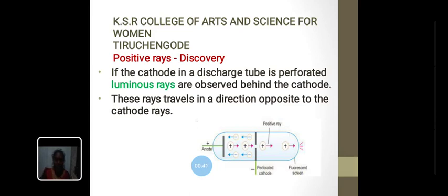These rays produce fluorescence when they strike a fluorescent screen present at the back of the cathode. In this diagram, they are deflected by electric and magnetic field. The directions of deflection indicate that they are positively charged. These are called positive rays or canal rays.